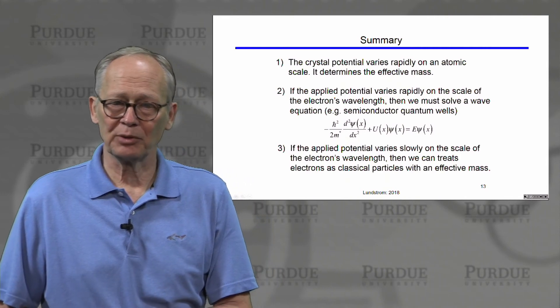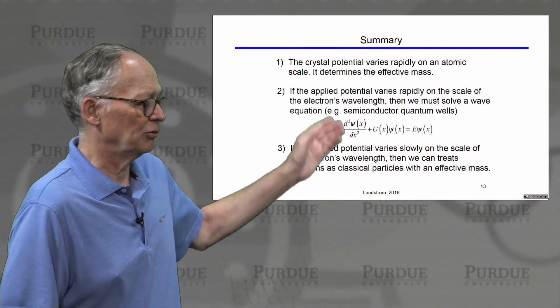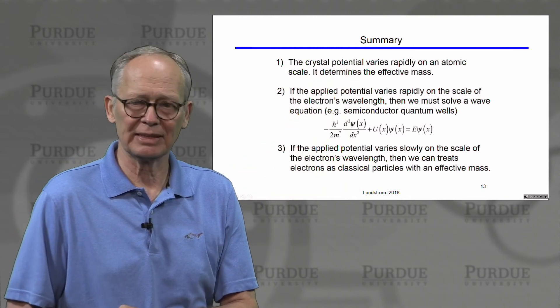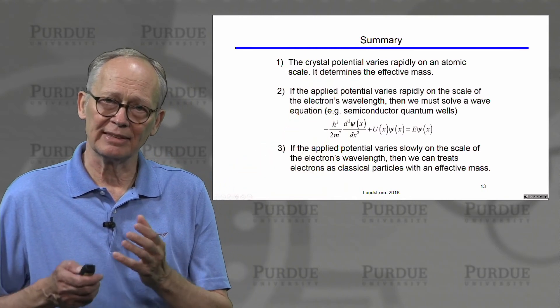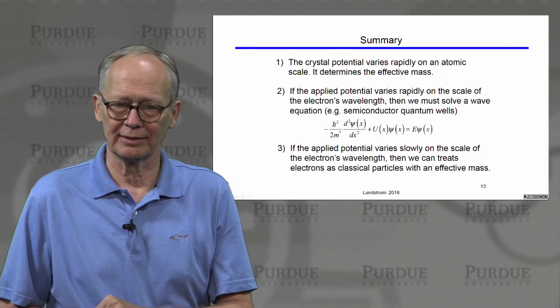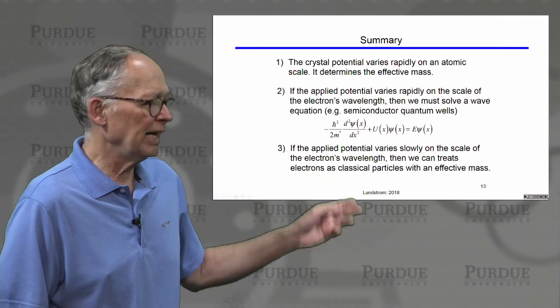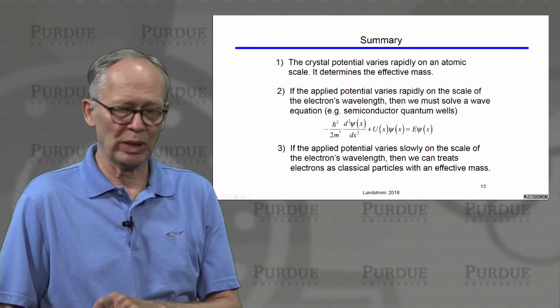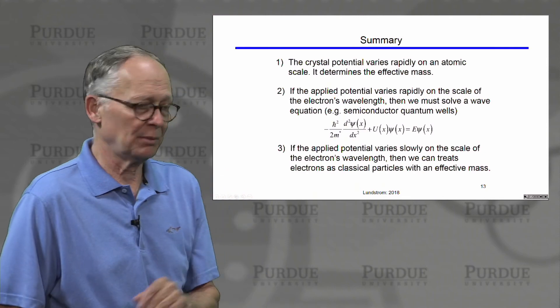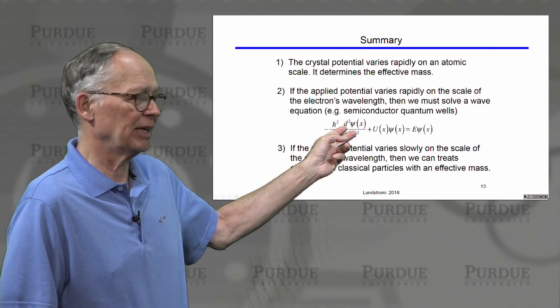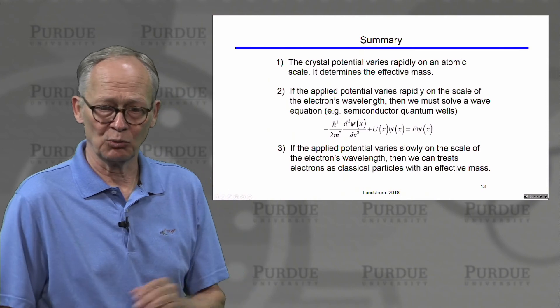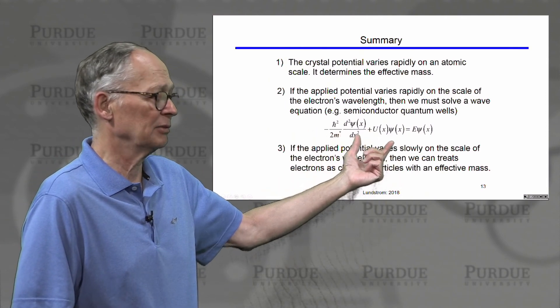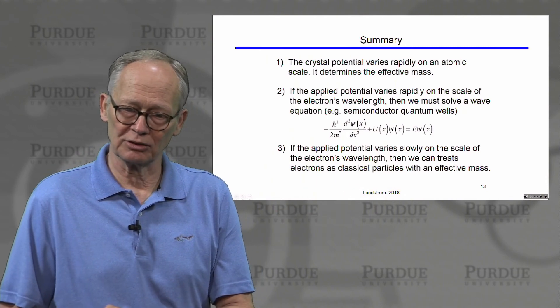So just to summarize, for electrons in solid, the crystal potential varies rapidly on an atomic scale and it determines the effective mass of electrons in the semiconductor. If the applied potential changes rapidly on the scale of the electron's wavelength, then we must always solve a wave equation. And sometimes we can engineer semiconducting structures to produce quantum wells. And when we do that, we must solve the wave equation to understand how the electrons in those quantum wells behave.